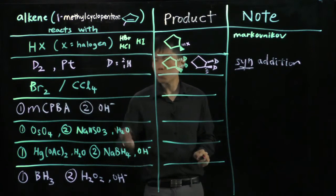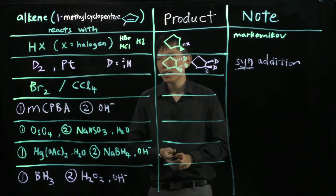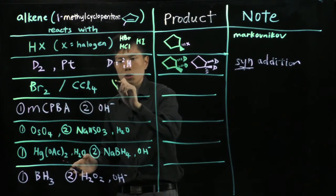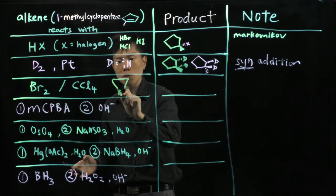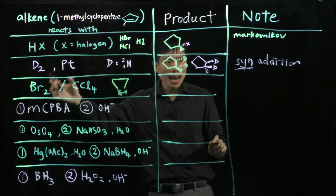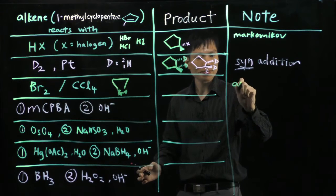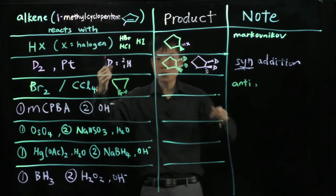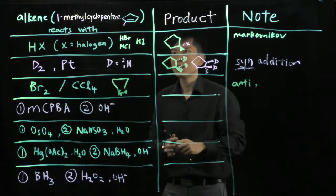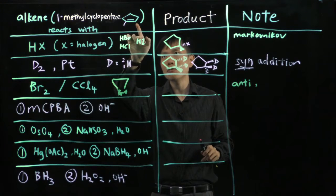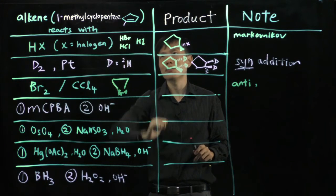Next up, Br2 and CCl4. Now whenever you see Br2, it means that you must form a three-membered bromonium ion in this case. So it must be anti-addition, and the two Br must be on the opposite end. So the Br is big, so we go to the carbon that's not so hindered, which is here, and form this bromonium ion.